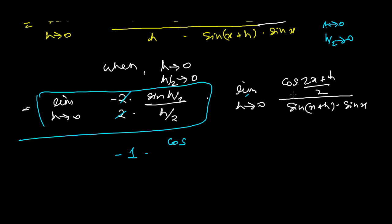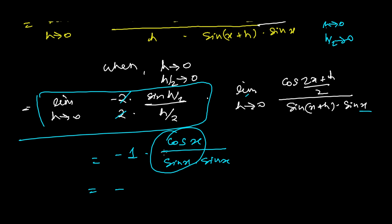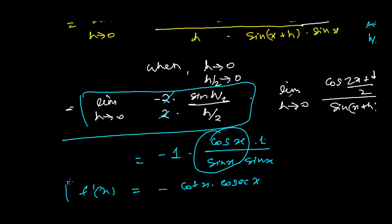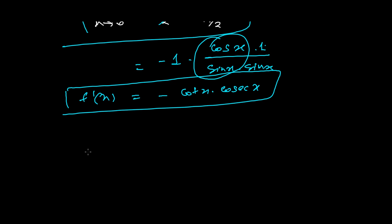Applying the limits: sin(h/2)/(h/2) → 1, cos((2x+h)/2) → cos(x), sin(x+h) → sin(x), and sin(x) stays sin(x). So we get minus cos(x) over sin²(x), which is −(cos(x)/sin(x))·(1/sin(x)) = −cot(x)·cosec(x). Therefore, the derivative of cosec(x) is −cot(x)·cosec(x).